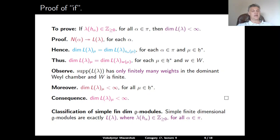In this way we have the classification of all simple finite dimensional G-modules: these are exactly the simple highest weight modules L(λ) where the highest weight λ satisfies λ(H_α) is a non-negative integer for every simple root α.